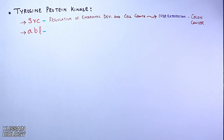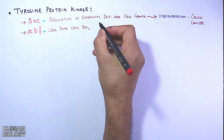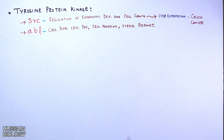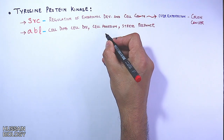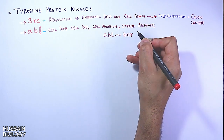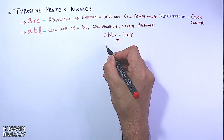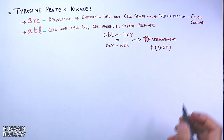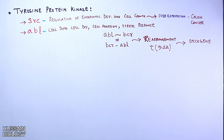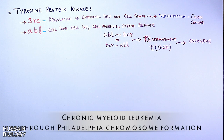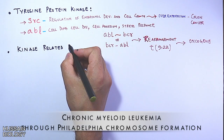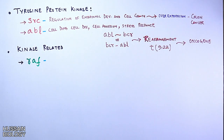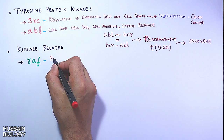The ABL gene aids in cellular differentiation, cell division, cell adhesion, and stress response. When it undergoes chromosomal rearrangement with the BCR gene — known as BCR-ABL rearrangement — this leads to the formation of an oncogene that causes chronic myeloid leukemia.